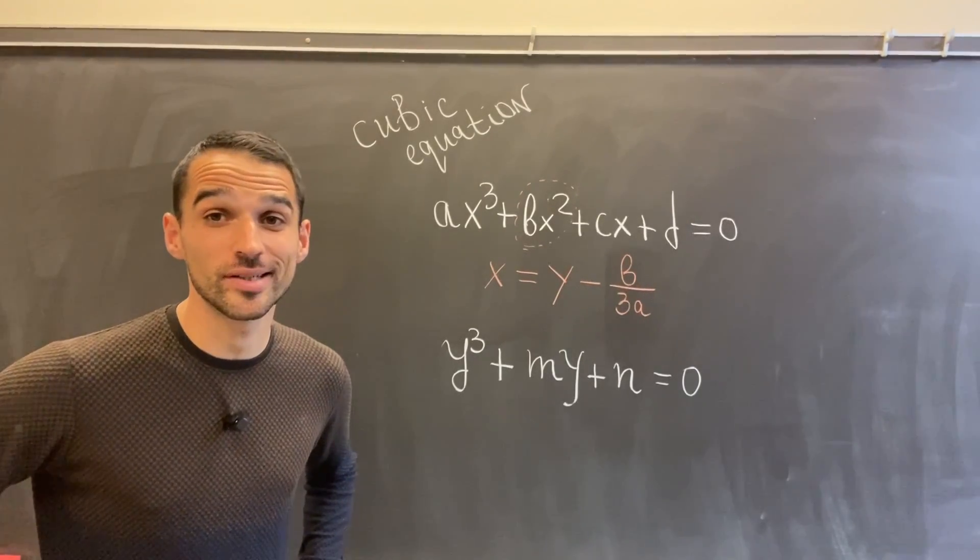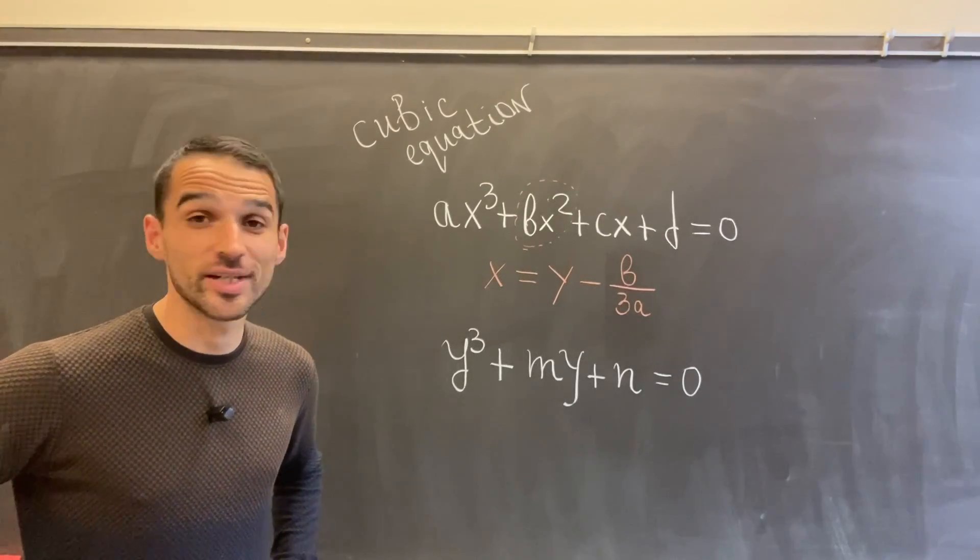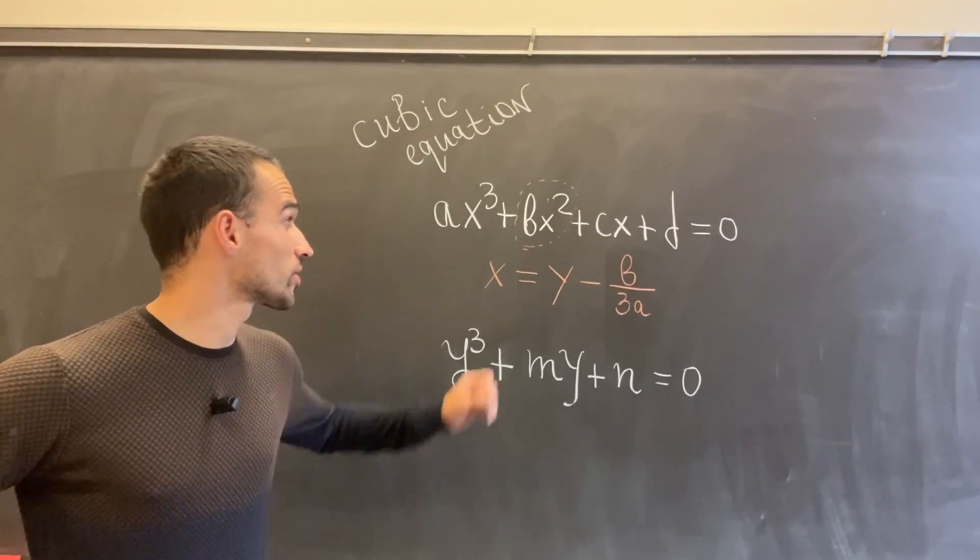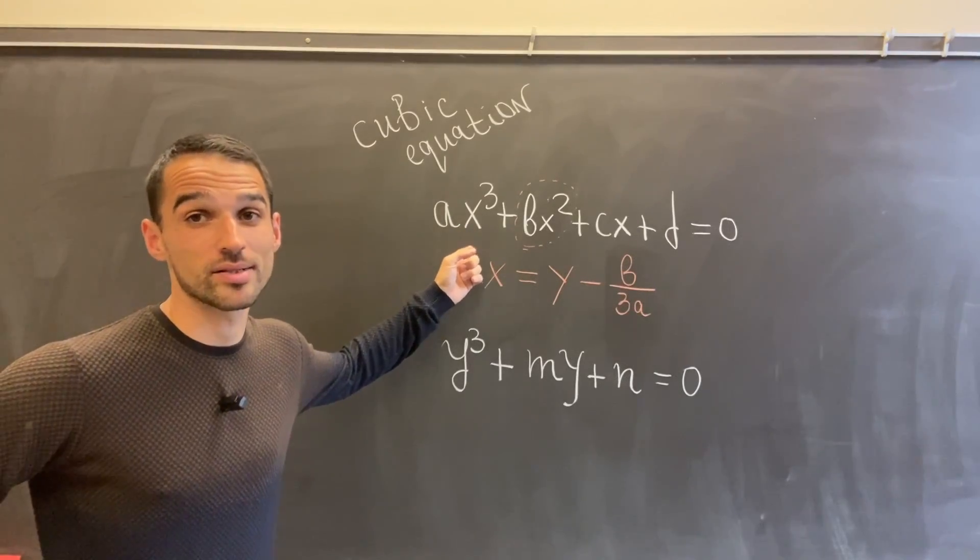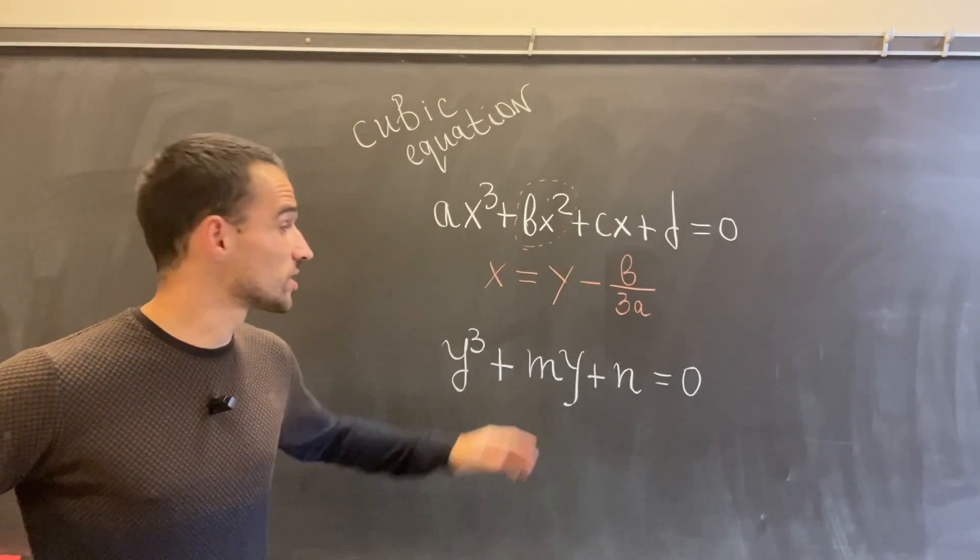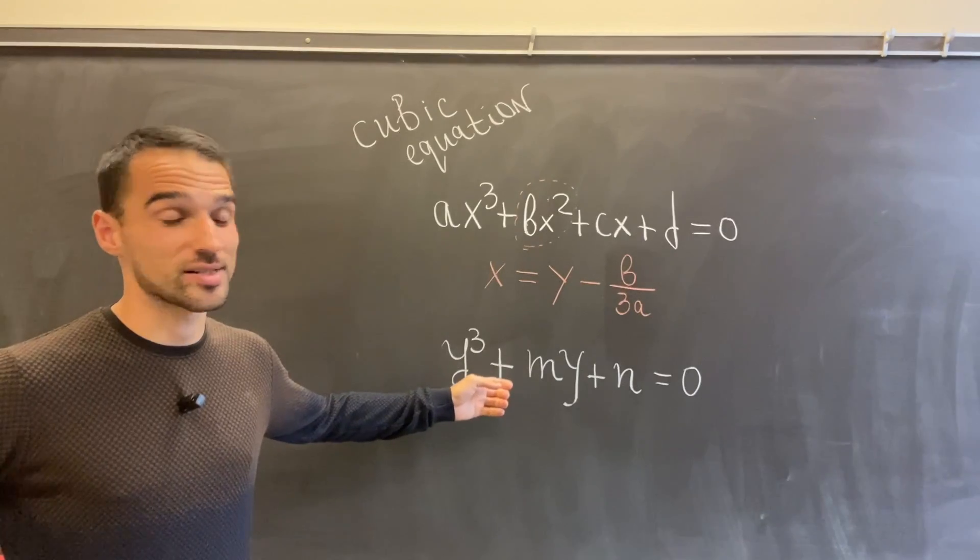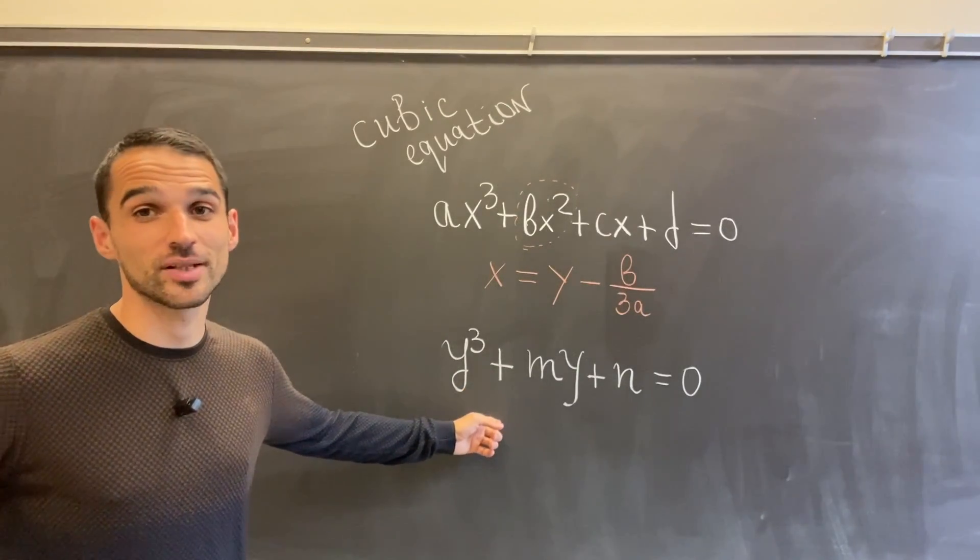This would be b over 3a—here y³ but not 2 as before, just because I have power 3 now and 3 choose 1 is 3. So this is the right substitution, and after I simplify I will get something of this kind.